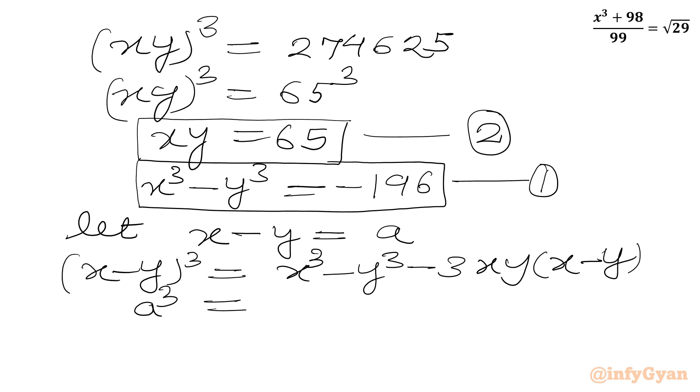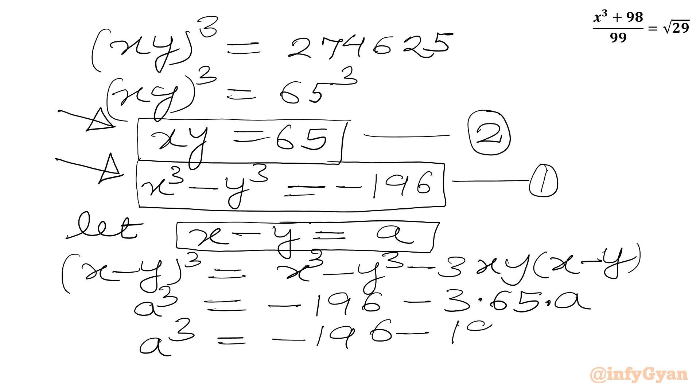So LHS will be a cubed. RHS will be x cubed minus y cubed, equation number 1, minus 196, minus 3 times xy, equation number 2, 65, and x minus y is our substitution a. So we can write the cubic equation: a cubed equals minus 196 minus 195a, or we can write a cubed plus 195a plus 196 equals 0.